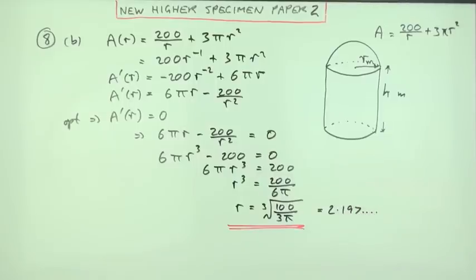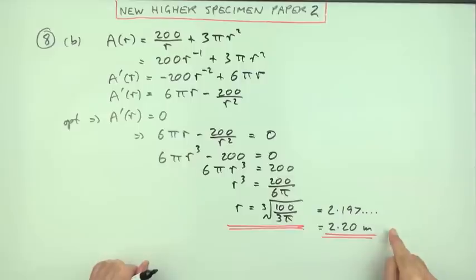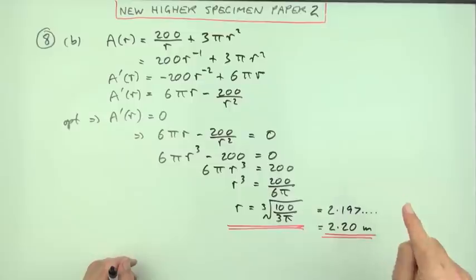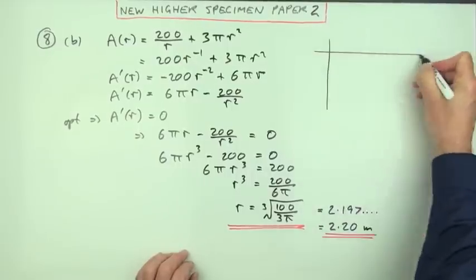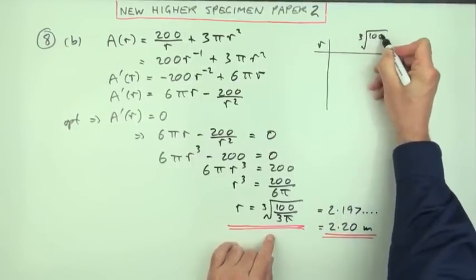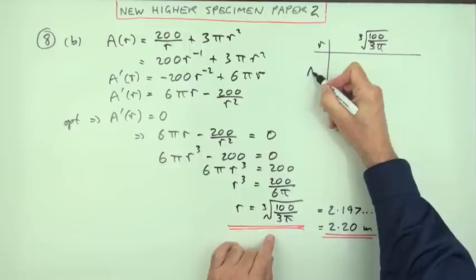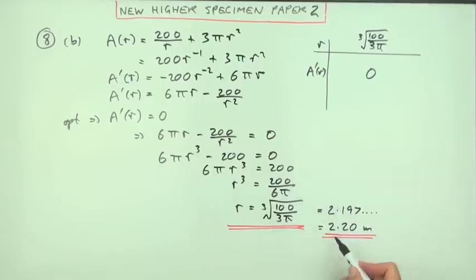But now you've got to justify that this actually minimizes it, even though it says minimizes. You can use a nature table or the second derivative. I'll do the nature table first. So for A dashed of R, I know that at this value the answer is zero. Now I need something before it, say 1, and something after it, say 10.